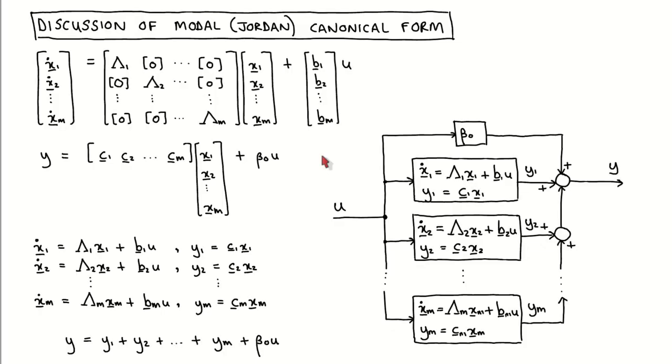We have so far looked at three different types of systems and their corresponding modal canonical forms: systems with only distinct real poles, systems with complex poles, and systems with repeated real poles.